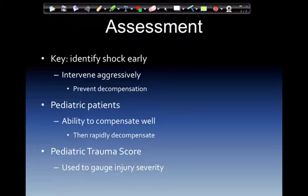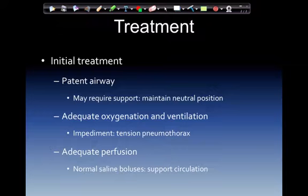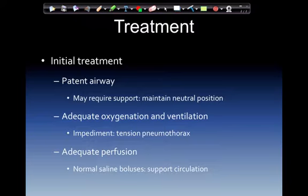A pediatric trauma score is used to gauge the amount of trauma, computed by adding scores for individual categories. In treatment, maintain a patent airway — it may require support. Maintain neutral position; kids need to be placed in a sniffing position, and a folded towel or small blanket underneath the shoulders might be adequate. Ensure adequate oxygen and ventilation. Any impediment, such as a tension pneumothorax, requires immediate treatment. Needle chest decompression for pediatric patients is similar to adults, but the needle length and catheter should be shorter. Normal saline boluses of 20 milliliters per kilogram support circulation.